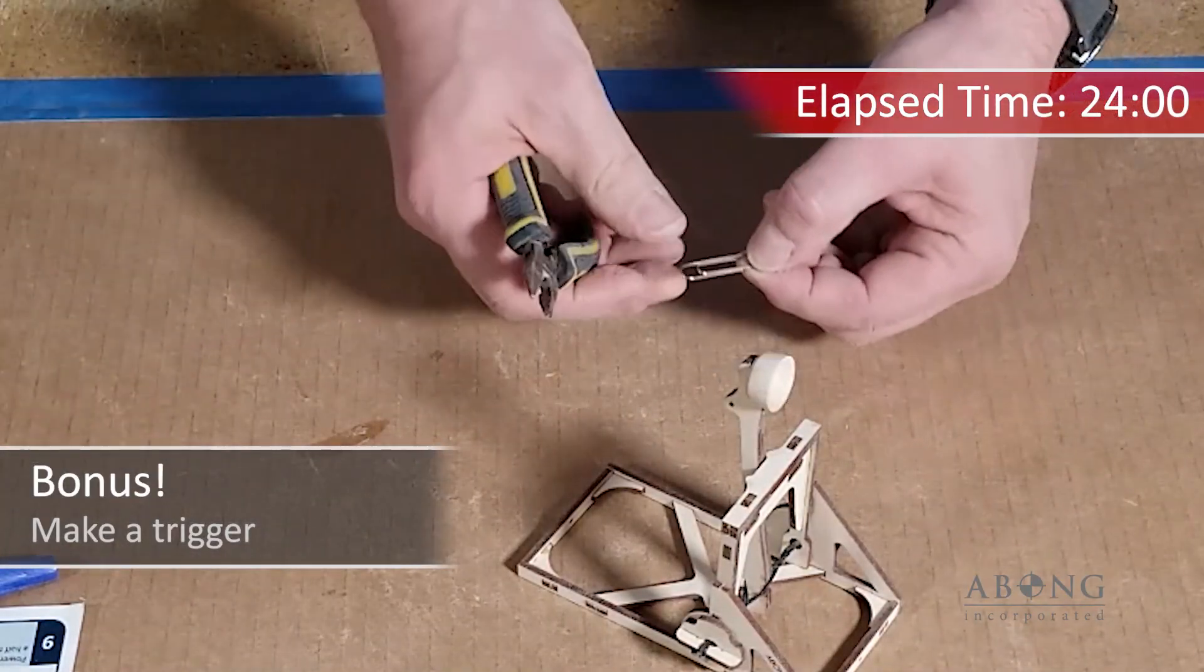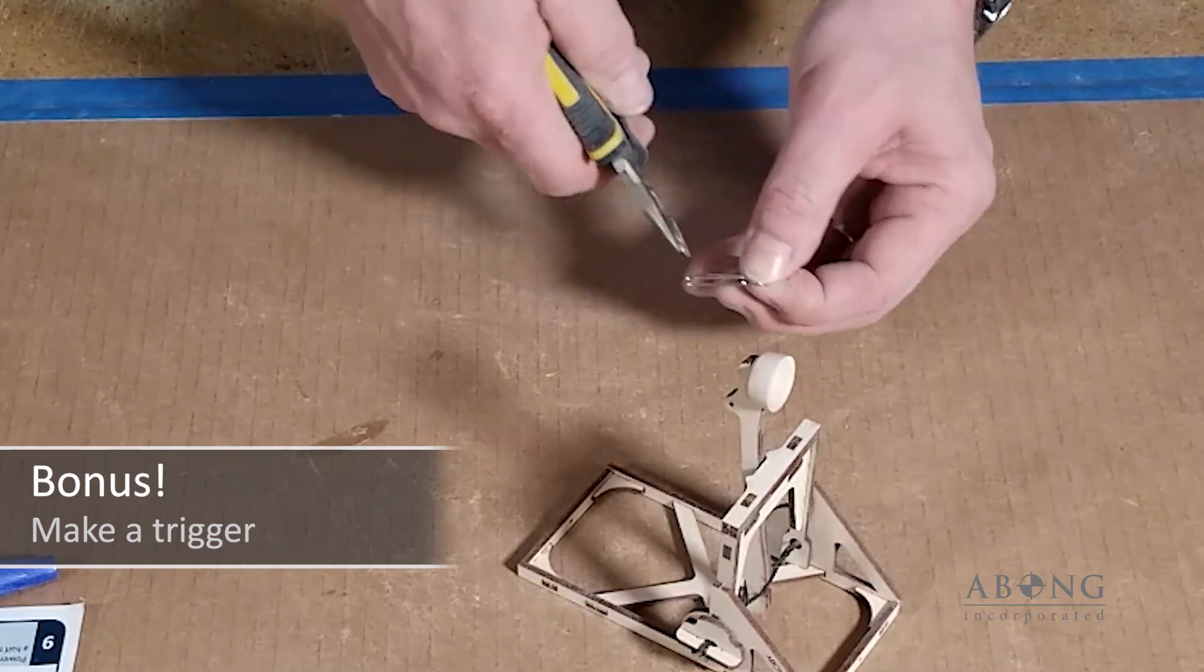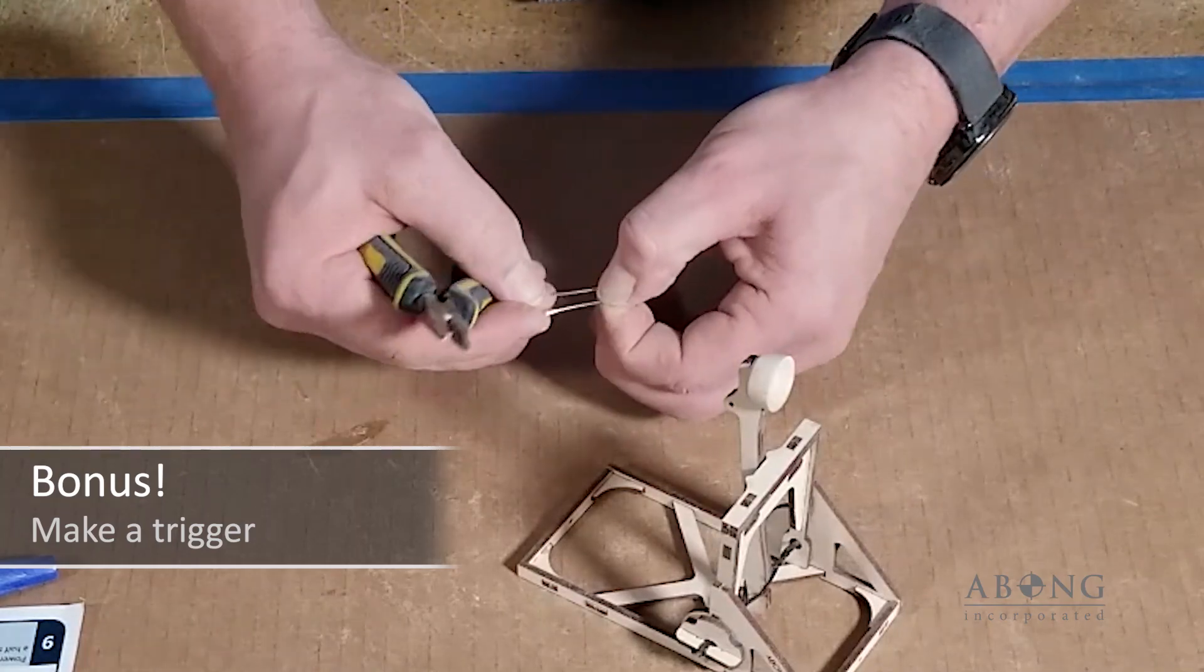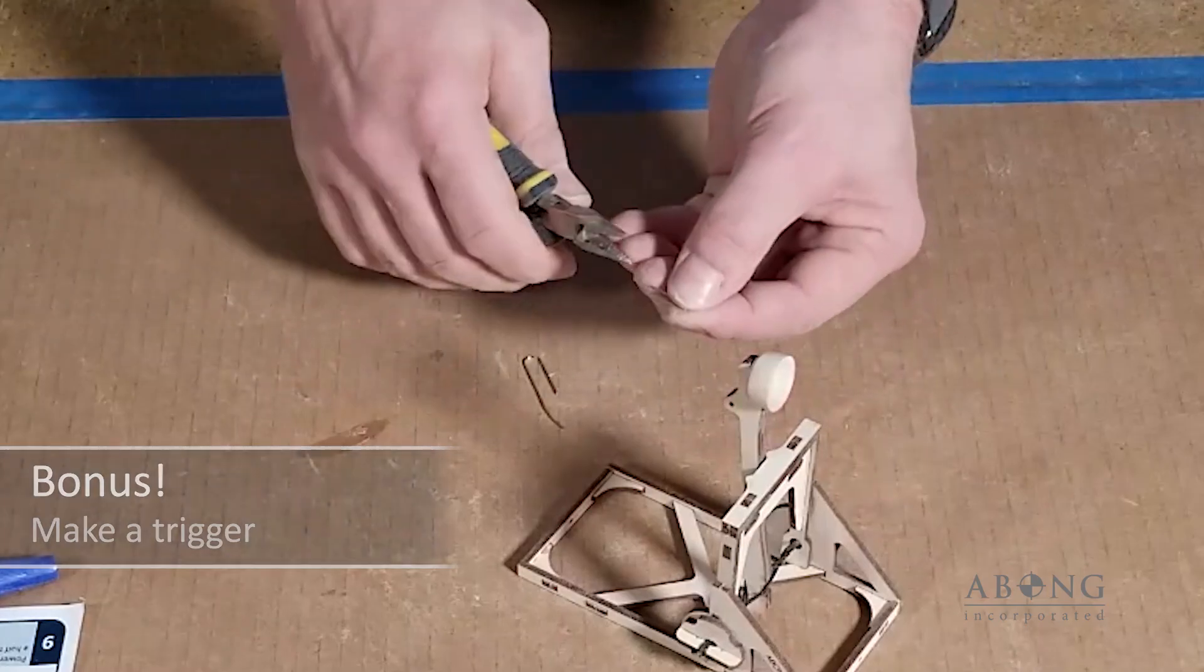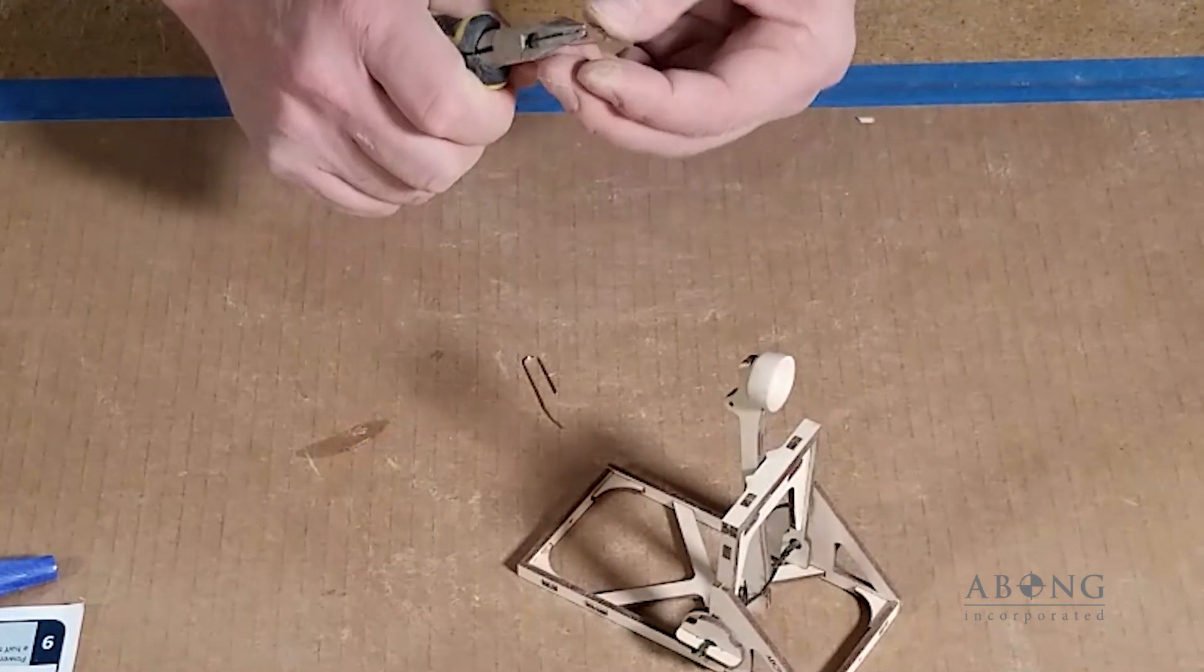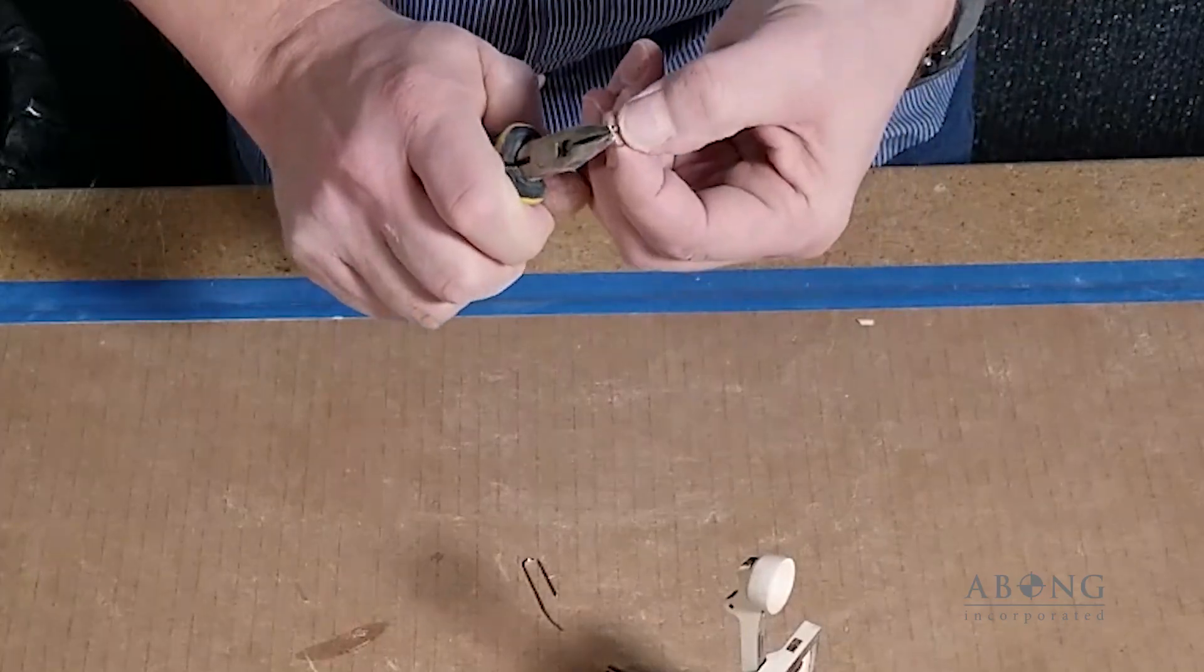So now the last step here is just to make the trigger. So take your ordinary paper clip, snip off the short end. And you're just going to form it into a little D. So fold one side over, then the other side over.